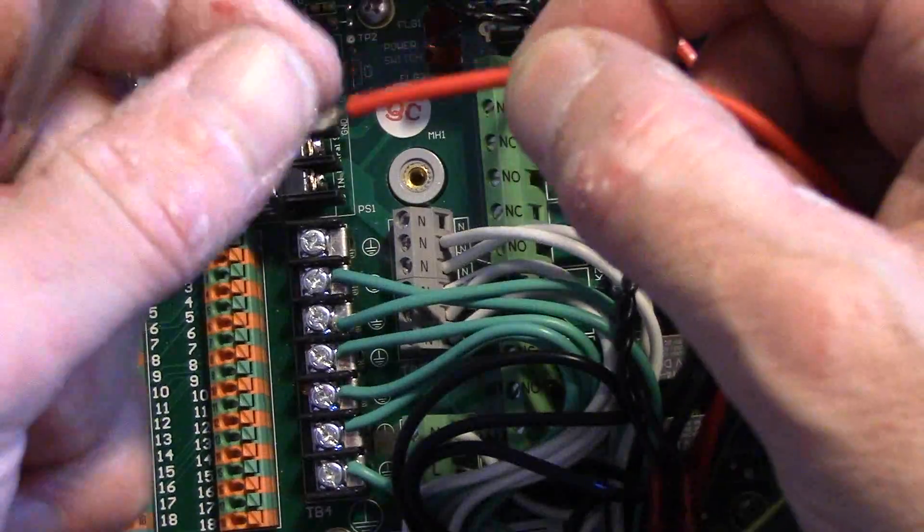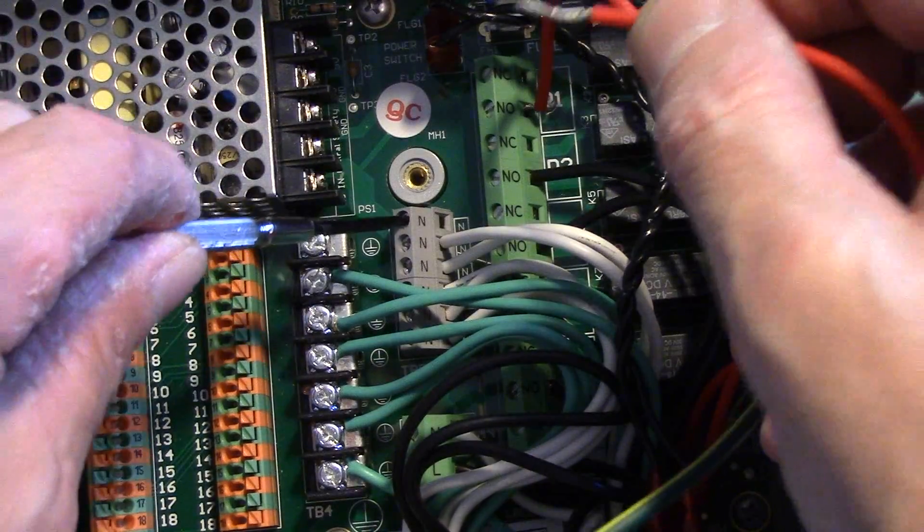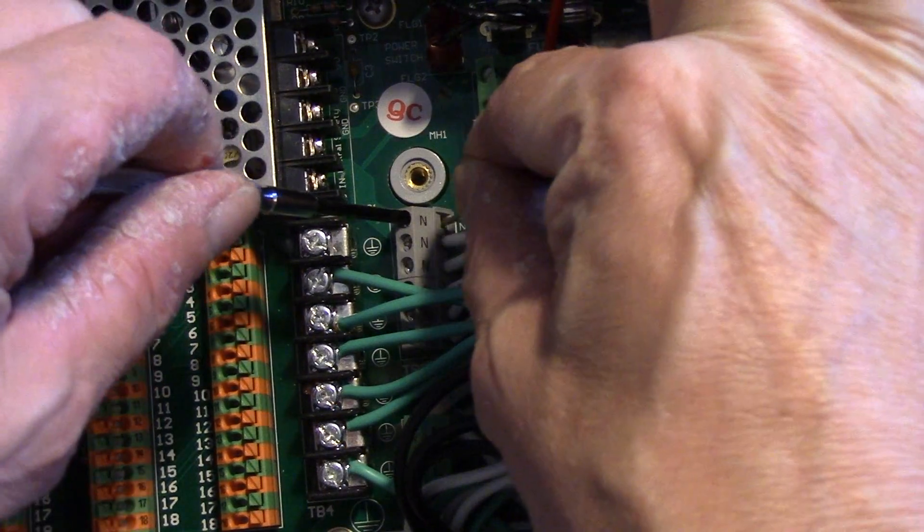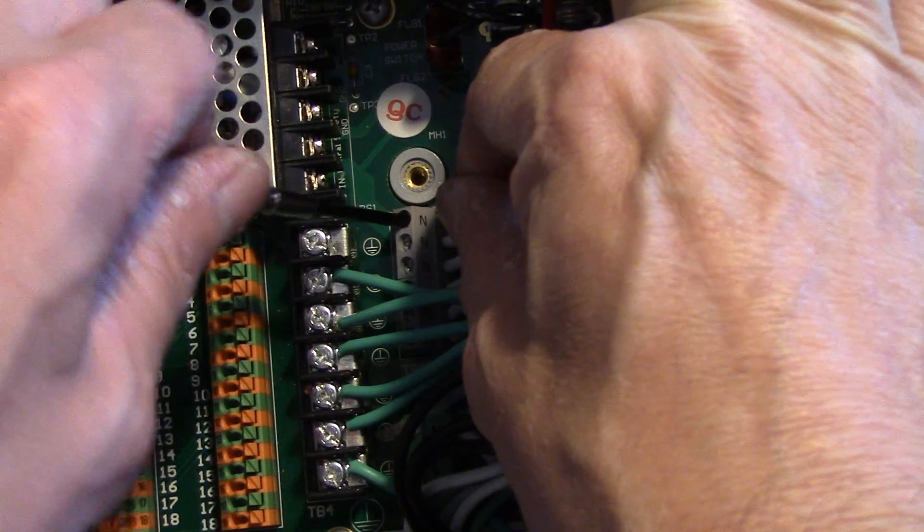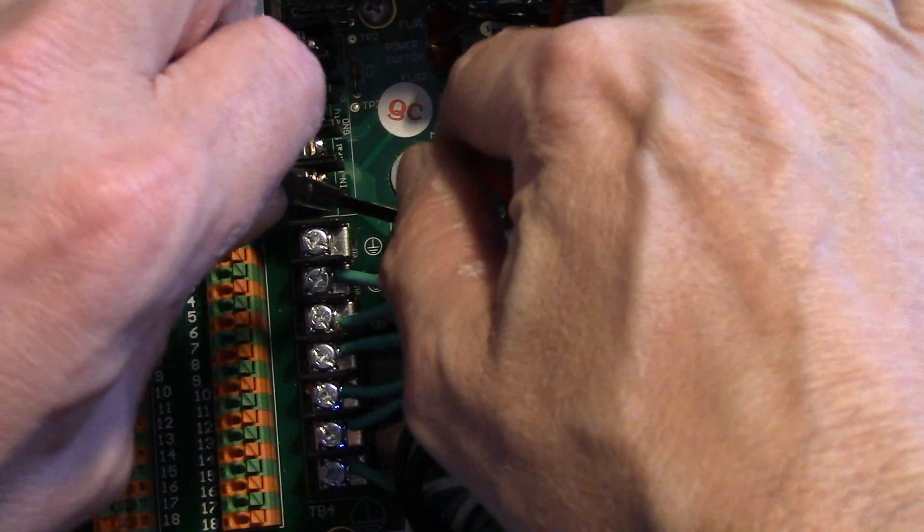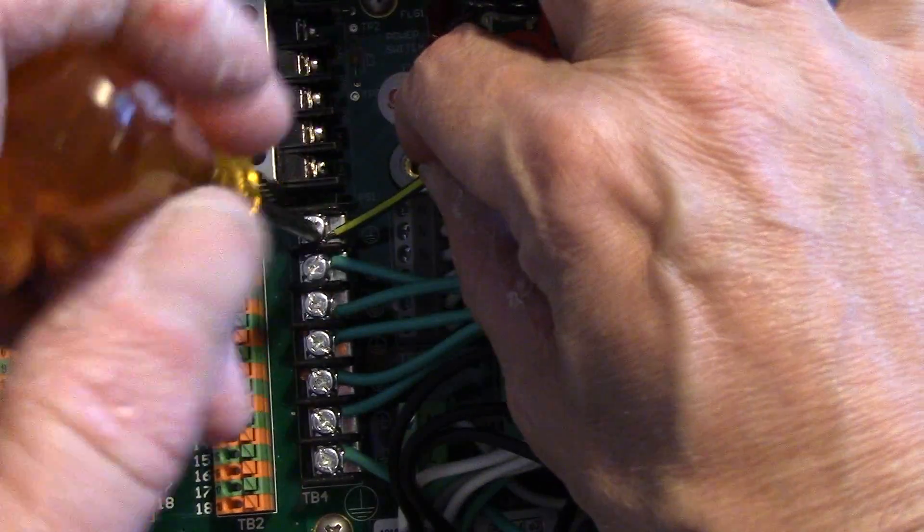Connect the other wire to TB5 the same way. Loosen the set screw, insert the wire, and then tighten. And finally, the ground.